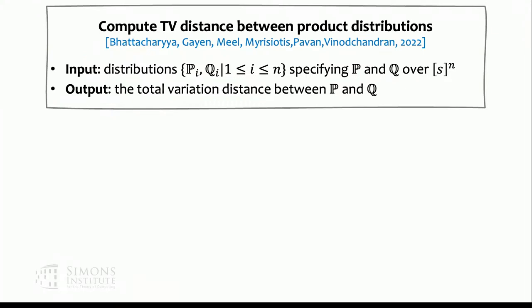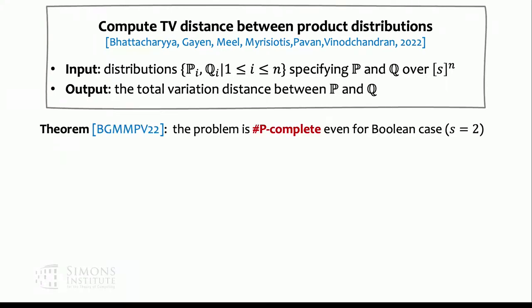The computational problem we consider: the input is two product distributions p and q over the sample space S^n, where p is described by n marginal distributions, and the algorithm outputs their total variation distance. This problem was initiated by Bhattacharya et al. last year. They proved that even in the Boolean case (|S| = 2), exactly computing the total variation distance between p and q is #P-complete.